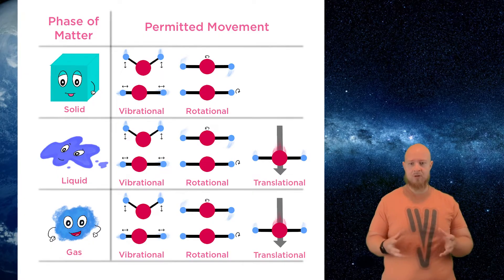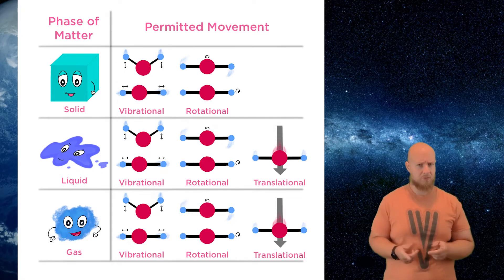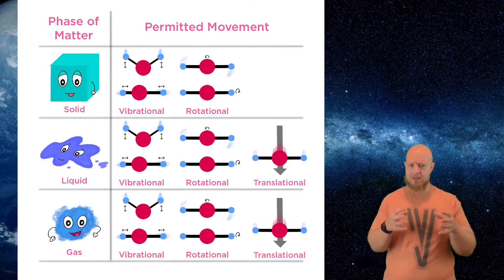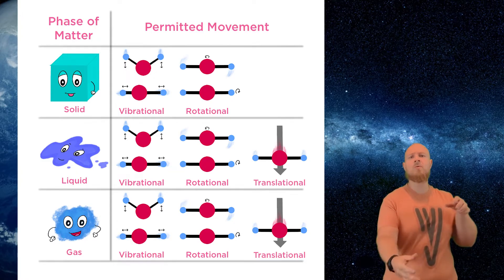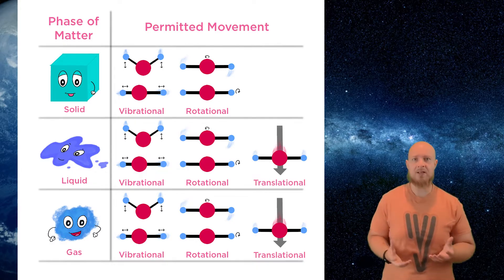In a solid, the particles are packed quite tightly together and aren't really free to move around. They can vibrate and rotate; they don't have any translational movement. In a liquid, the particles are free to move randomly but are packed together tightly enough and don't have enough energy to really move away from each other. That's why liquids fit the shape of their container.